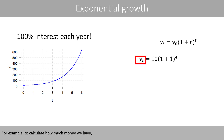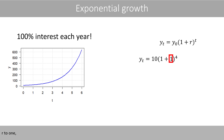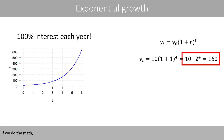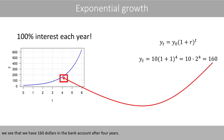For example, to calculate how much money we have after four years, we set T to 4, R to 1, and Y0 to 10, since we started with $10. If we do the math, we see that we have $160 in the bank account after four years.